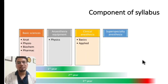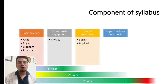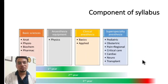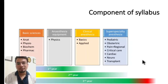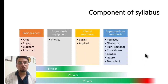The fourth component is super-specialty anesthesia. Super-specialty and clinical anesthesia reading should be started in the first half of the second year itself, and you should complete at least one reading of both by the end of your second year. This baseline knowledge will give you confidence to apply concepts in your third year. You will go to various operation theaters for super-specialties like pediatric, obstetrics, critical care, cardiac, neuro, transplant, and onco anesthesia during your post-graduation.